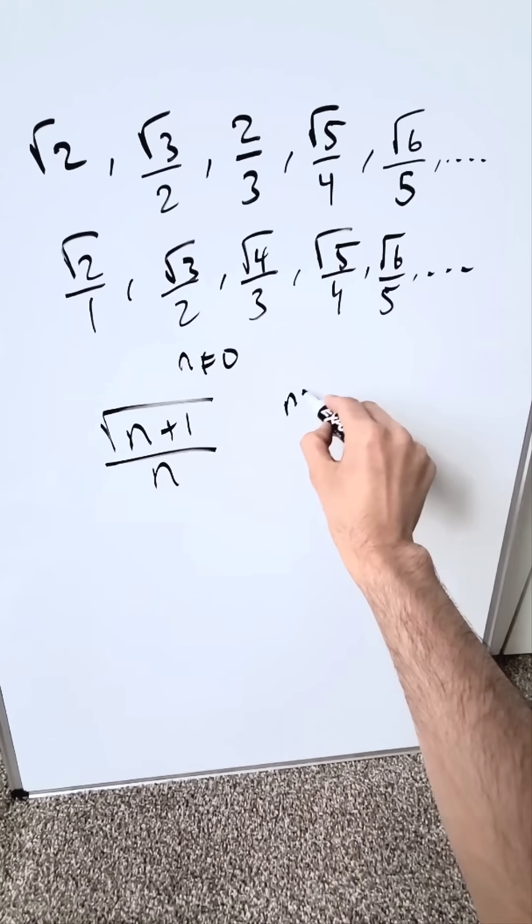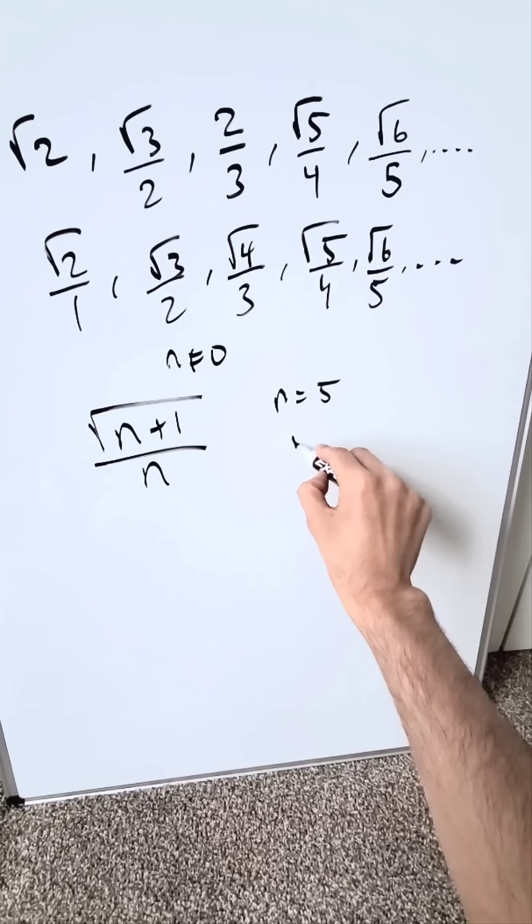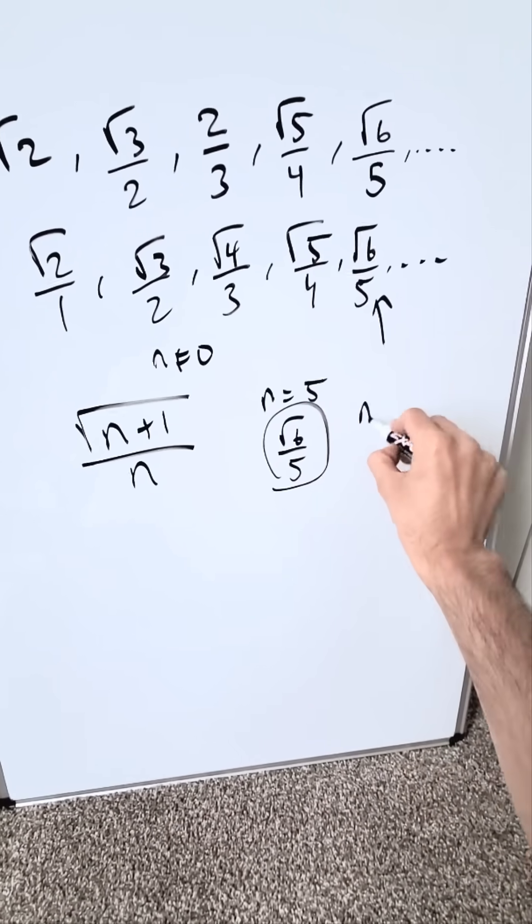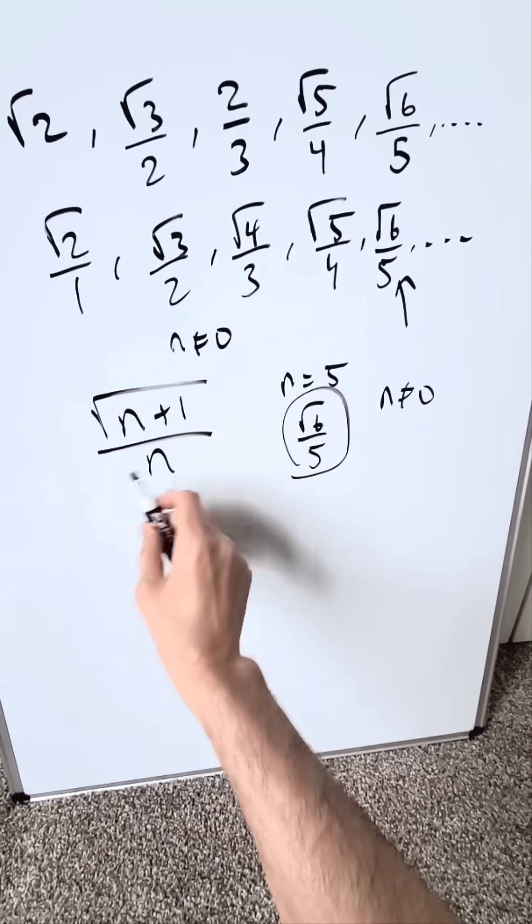Think about it. If N were equal to 5, you would do here root 6 over 5, and you would see this term develop. N here cannot be equal to 0 because then we'll put a 0 in the denominator.